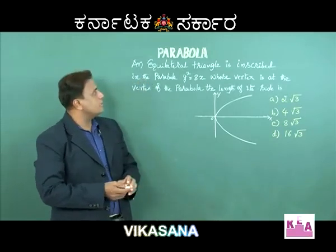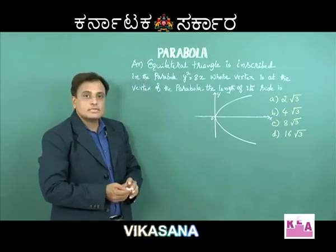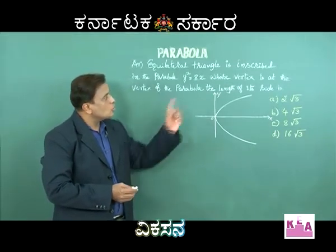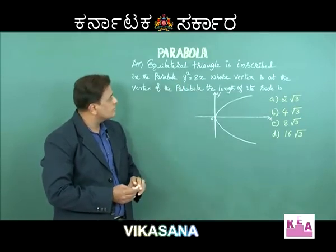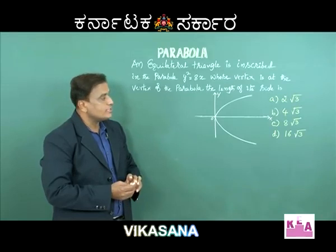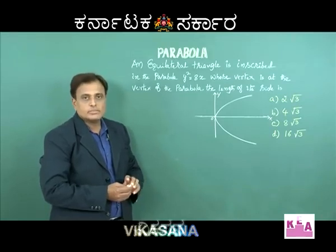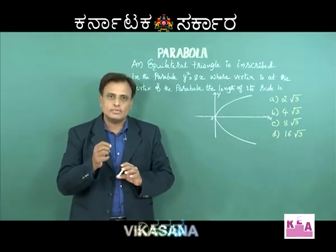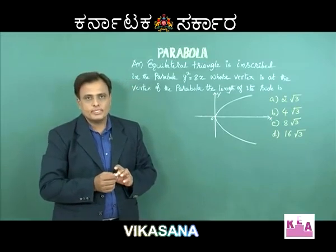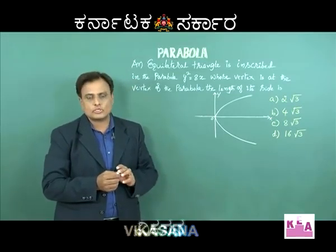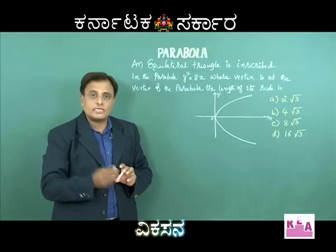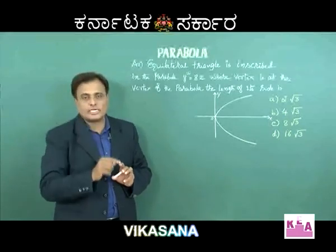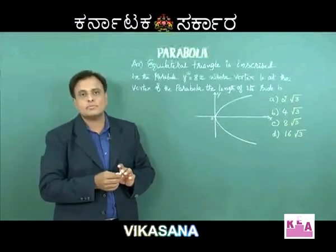An equilateral triangle is inscribed in the parabola y² = 8x, whose vertex is at the vertex of the parabola. Find the length of its side. In this question we have to find the length of the side of the equilateral triangle. All sides are equal in an equilateral triangle, and one vertex of the equilateral triangle is at the vertex of the parabola.